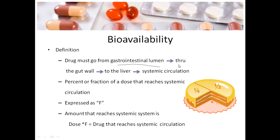Then it has to go through the gut wall, get to the liver, and then if it hasn't been all broken down by that point, it finally reaches systemic circulation. So you have to understand that these drugs are going through a lot just to get to systemic circulation and be able to do their job.